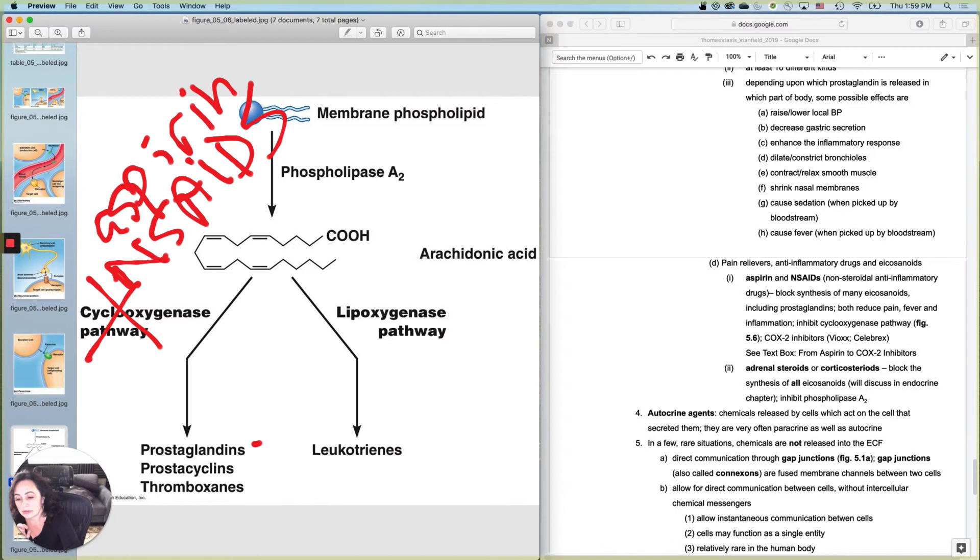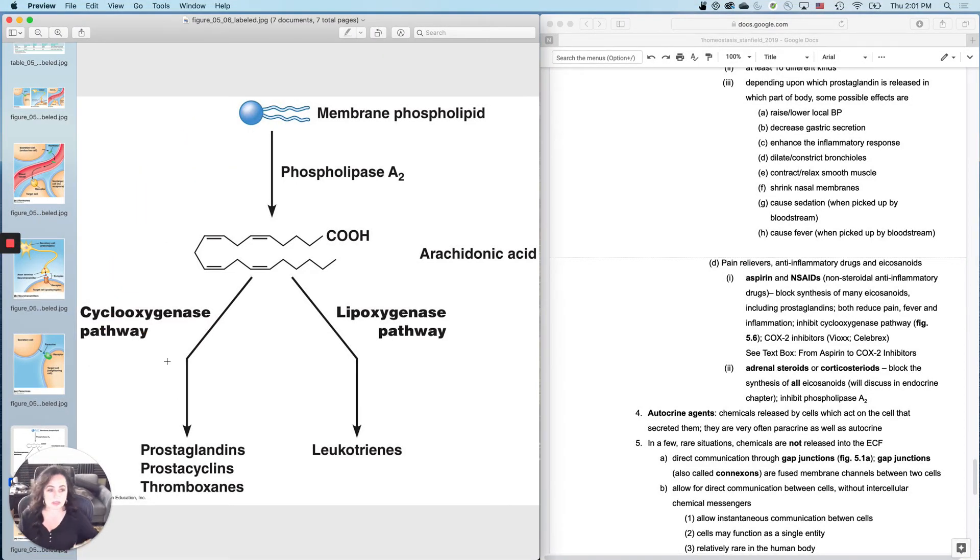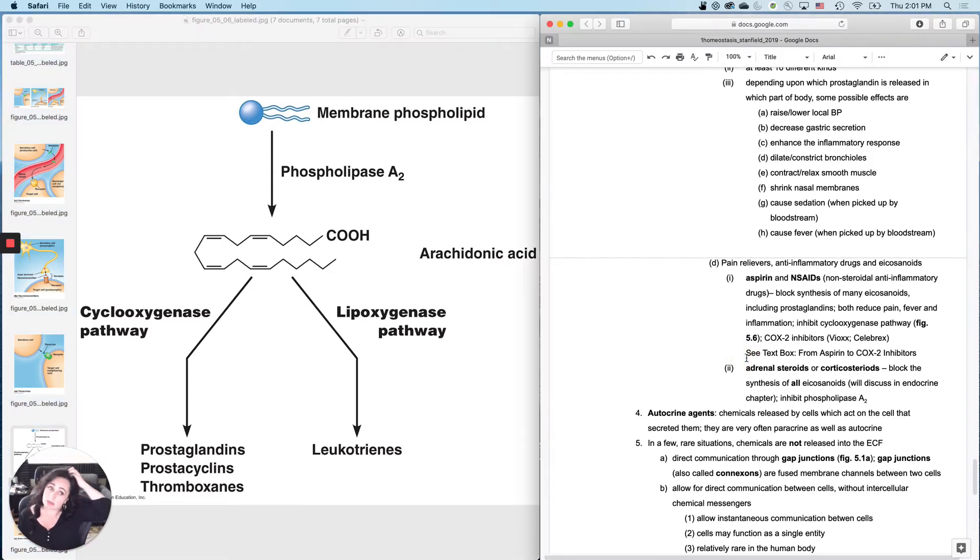They inhibit the cyclooxygenase pathway. Most of these are over-the-counter, but there are non-steroidal anti-inflammatory drugs that you can get by prescription. COX-2 inhibitors, they inhibit a specific type of cyclooxygenase. They're more effective than the over-the-counter medications. They also potentially have more side effects. There are even some lawsuits associated with them. Every once in a while, I will refer you to text boxes in your textbook. And those are worth reading if I tell you to look at them in your notes.